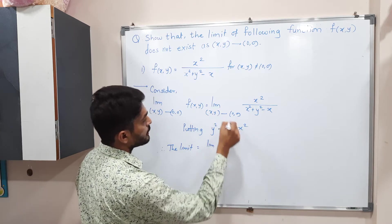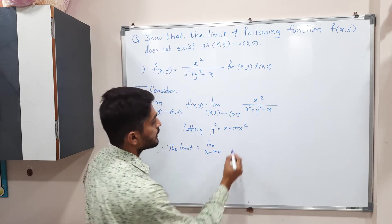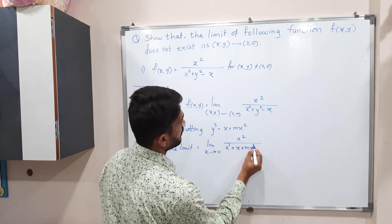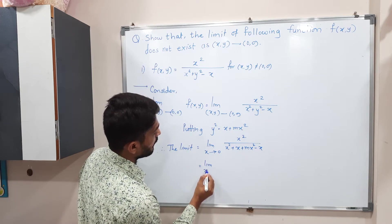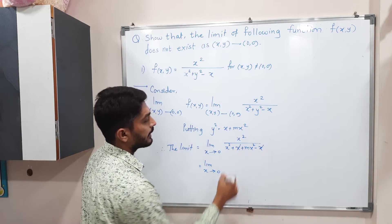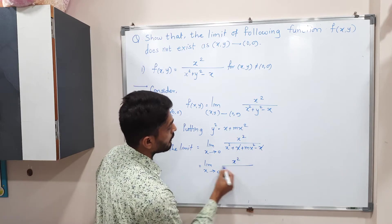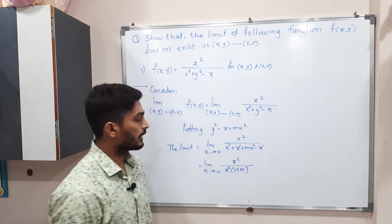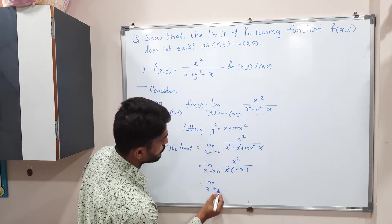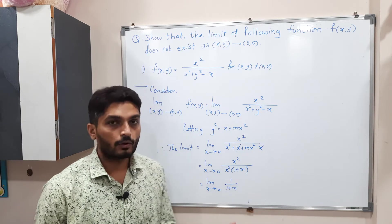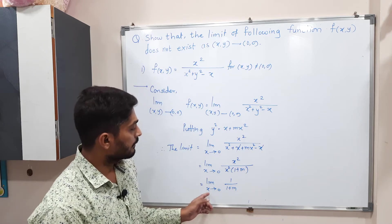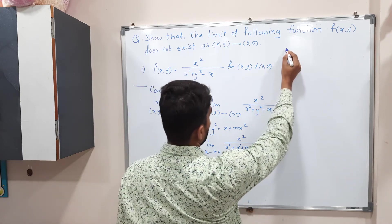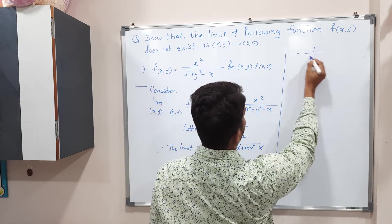Since the entire expression converts into x, we simply write x tends to 0. Substituting, we get x² / (x² + (x + mx²) - x). The x and -x cancel each other, and we have x² in both numerator and denominator, so we can cancel x². This gives limit as x tends to 0 of 1 / (1 + m). Since the expression is now independent of x, applying the limit gives 1 / (1 + m).